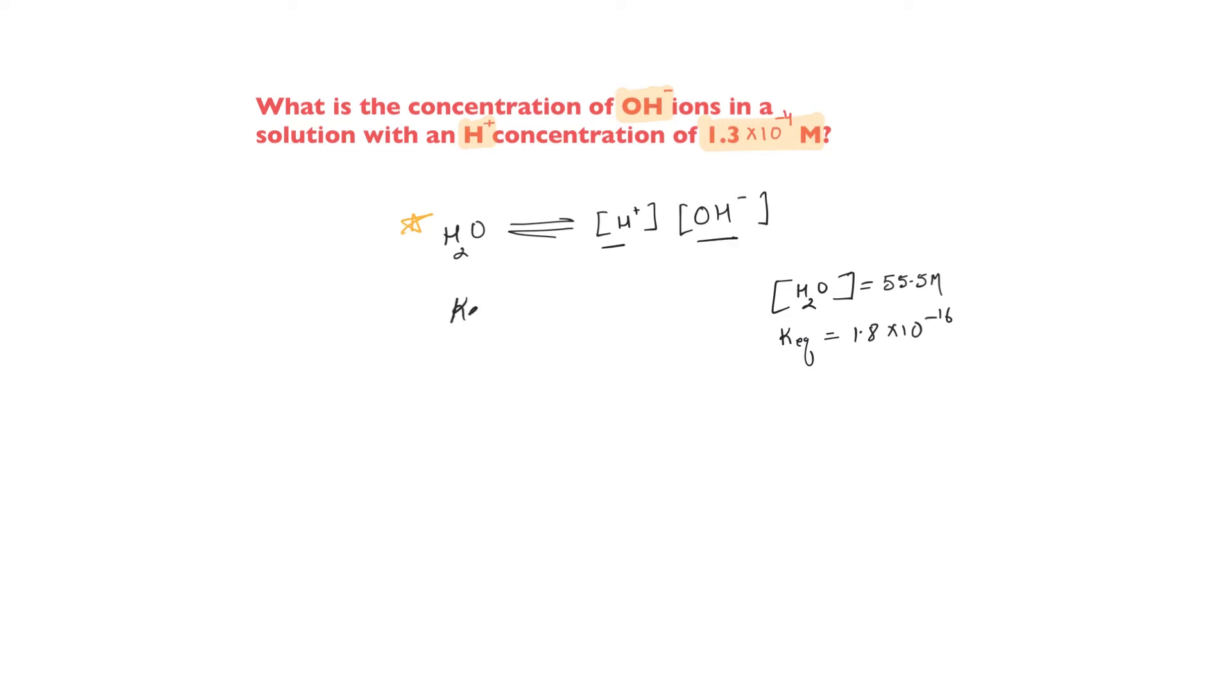We say K equilibrium equals H plus ion concentration times OH minus ion concentration divided by water concentration. Now, you don't have to do all of this all the time. I'm just trying to show you how this all occurs.